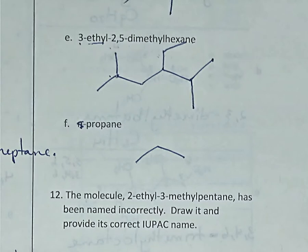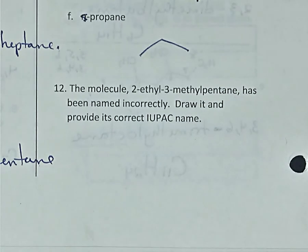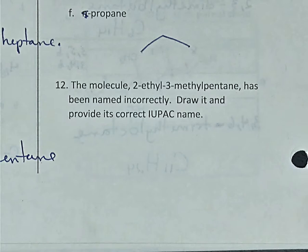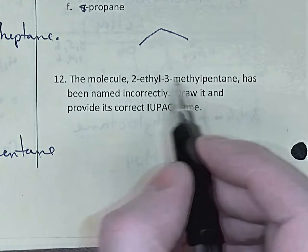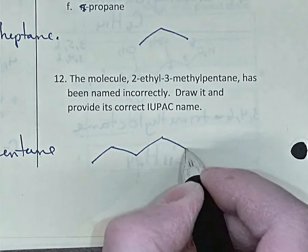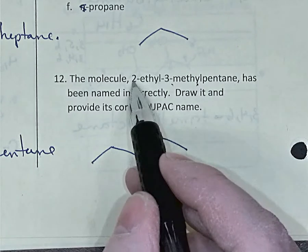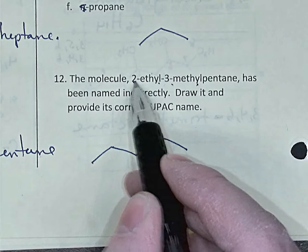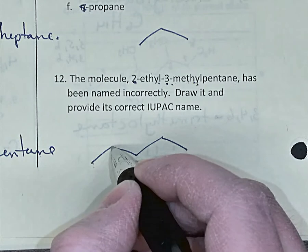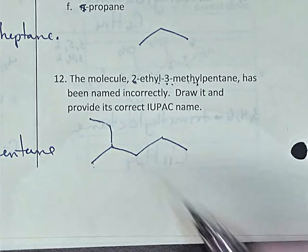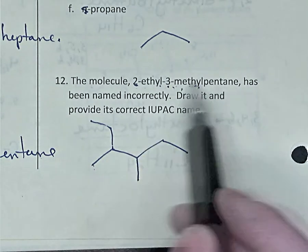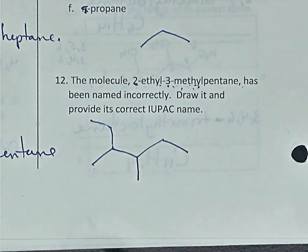Finally, we have the molecule 2-ethyl-3-methylpentane, but it's been named incorrectly. We're going to draw it and then figure out what its actual name should be. Pentane is a five-carbon molecule: 1, 2, 3, 4, 5. There's a two-carbon branch on the second carbon and a one-carbon branch on the third carbon. But that name is actually wrong — do you see why?